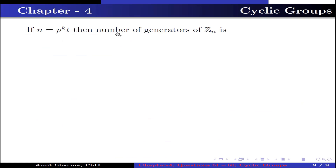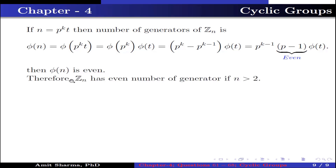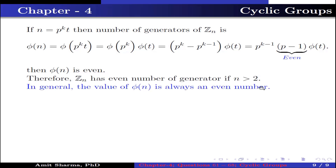If n = p^k · t, then the number of generators is φ(n) = φ(p^k · t) = φ(p^k) · φ(t) since p^k and t are coprime, which equals (p^k − p^(k−1)) · φ(t) = p^(k−1) · (p − 1) · φ(t). Since p is an odd prime, p − 1 is even, so φ(n) is a multiple of an even number, therefore φ(n) is even. Hence Z_n has an even number of generators if n > 2. In general, φ(n) is always an even number for n > 2.